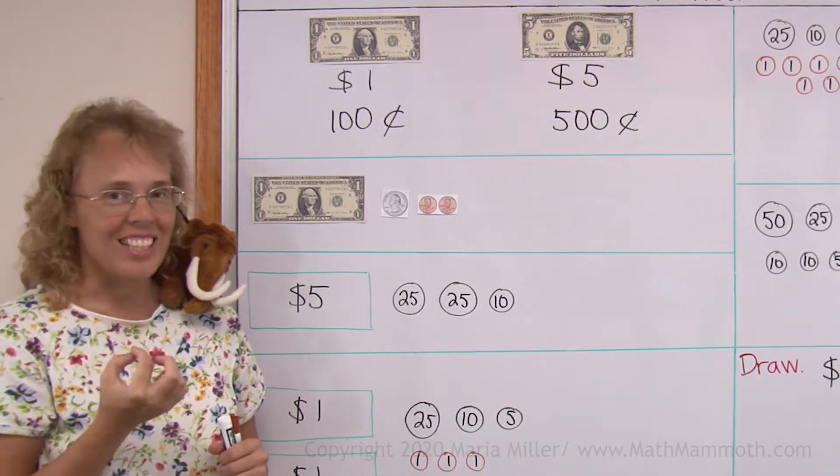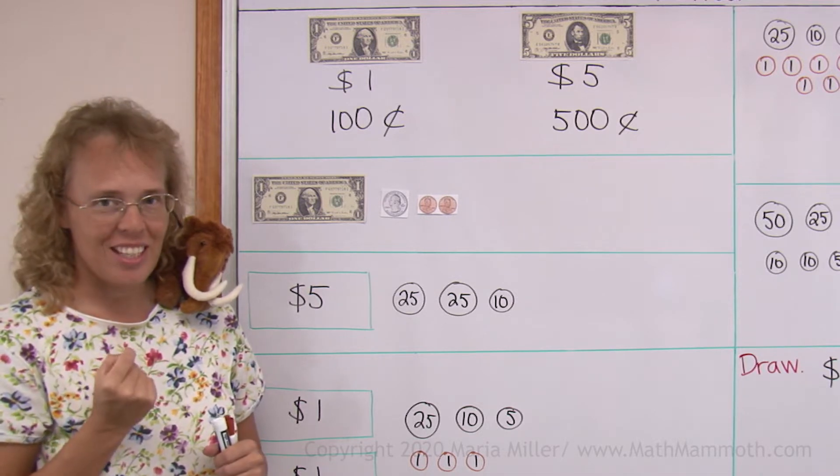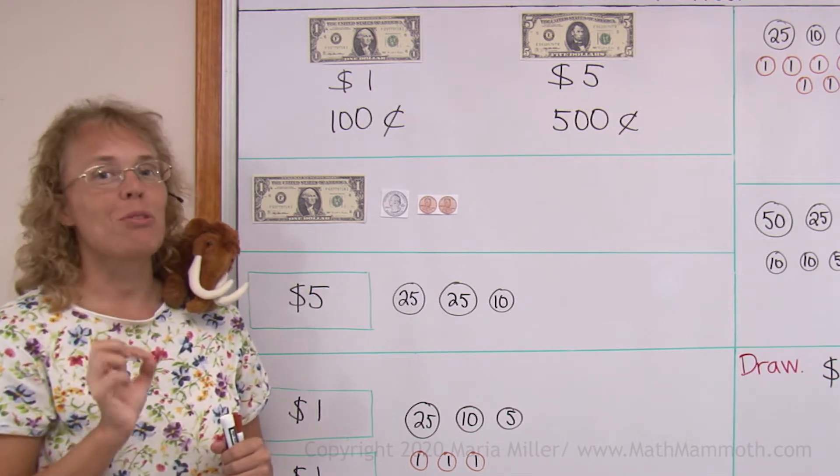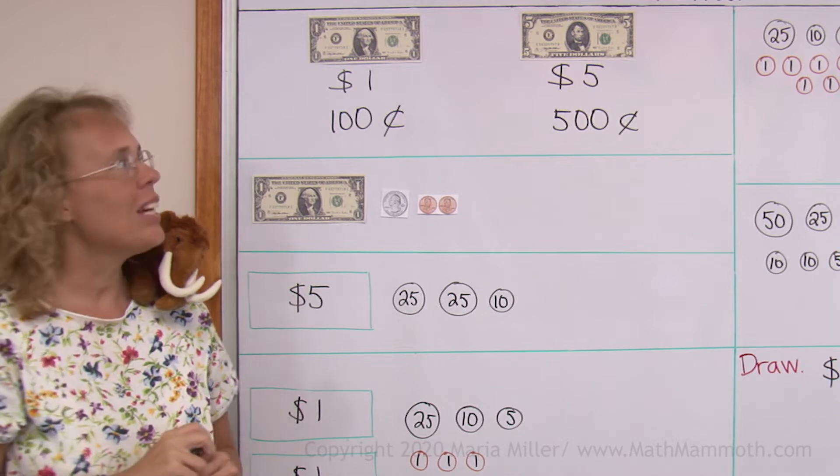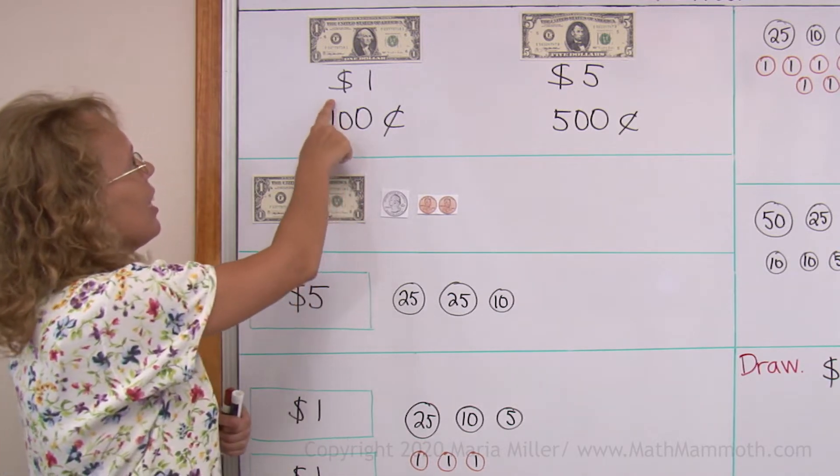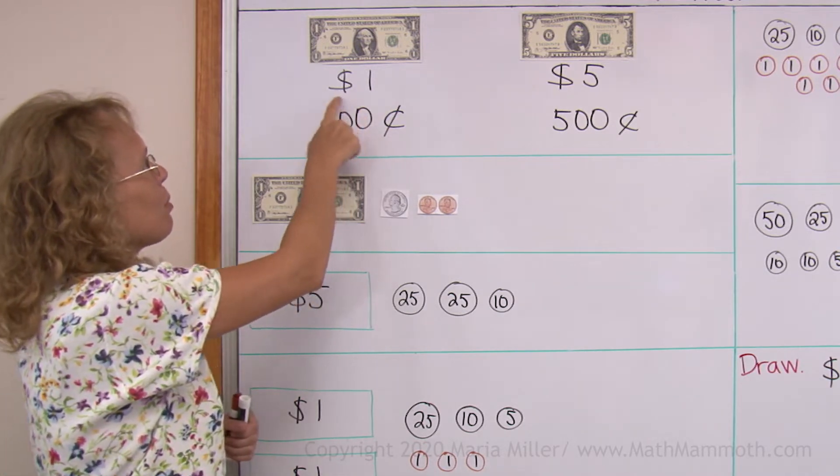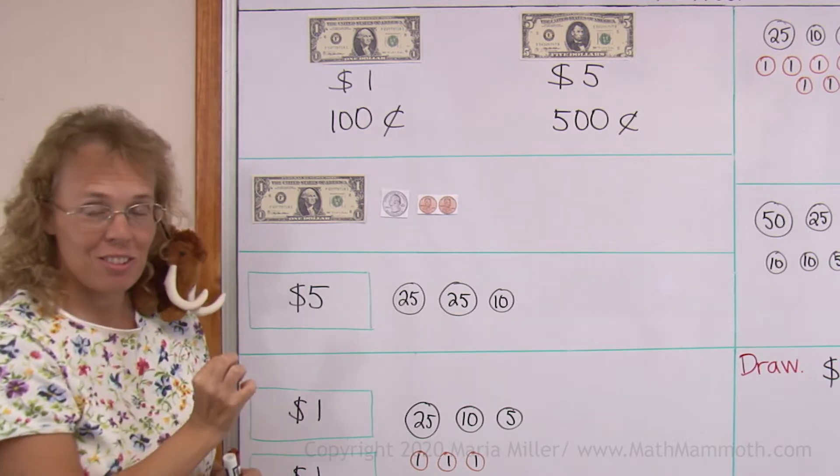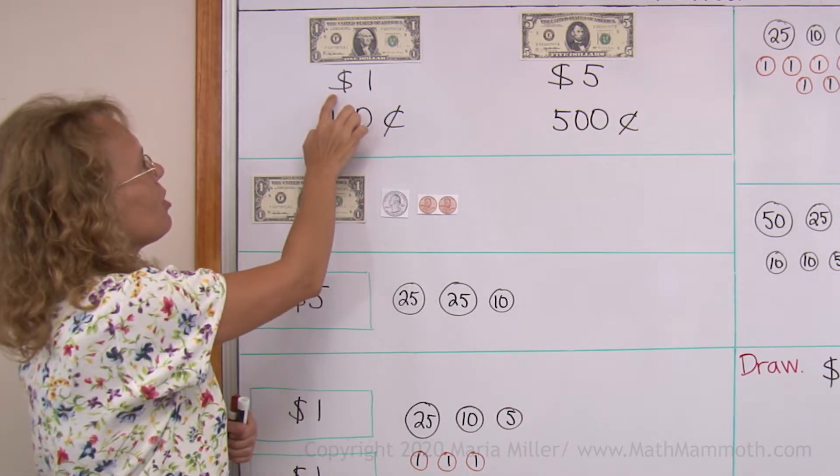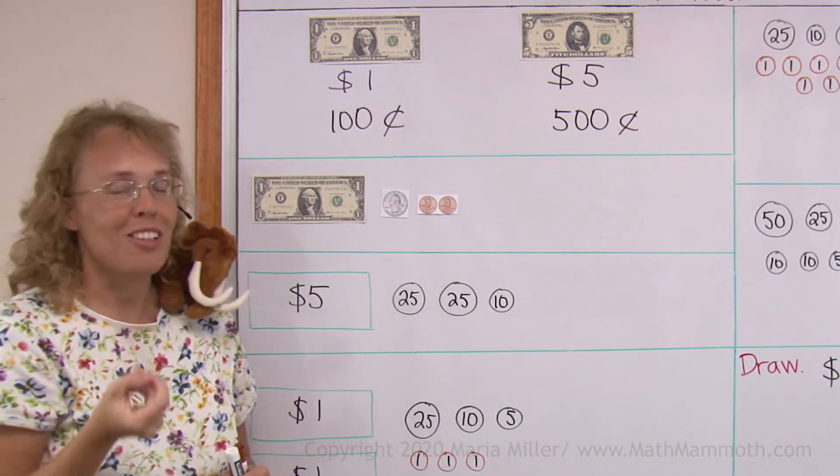It is worth hundred cents and it is one dollar. In other words, one dollar equals hundred cents. And this is how we write it. In front of the number one, we put this dollar sign with a line through it. And that means dollars. So dollar and one, but we read it one dollar.